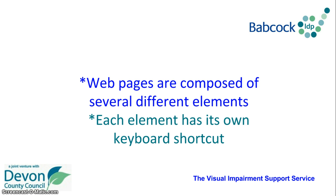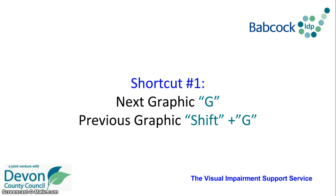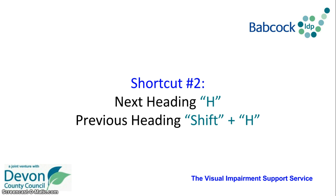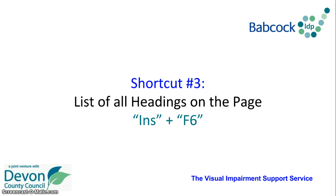Web pages are composed of several different HTML elements and each element has its own keyboard shortcut. To go to the next graphic you press G, and for the previous graphic you press Shift and G. For the next heading press H, and for the previous heading press Shift and H. To get a list of all the headings on the web page, press Insert and F6 together.